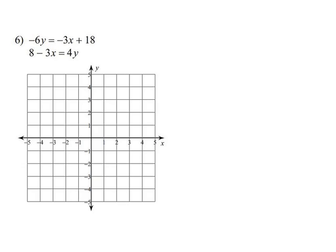So the next problem I'm going to work on is number 6 of the independent practice from lesson 2.1. Okay, so like we did with the others, we're going to take negative 6y equals negative 3x plus 18, and we're going to write it into slope-intercept form.